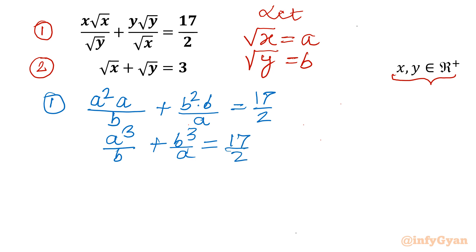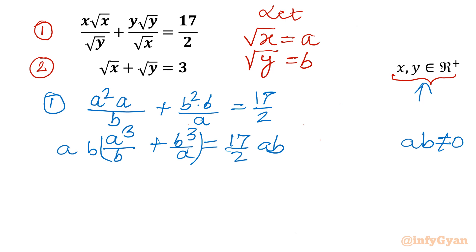We can multiply both sides by ab. Since x and y are both positive real numbers, a and b are also positive, so ab cannot equal zero. Multiplying through gives us equation 1 as: a⁴ + b⁴ = (17/2)·ab.